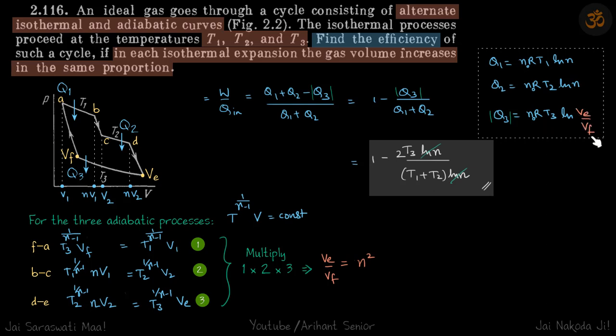So we need to find what is the value of Ve by Vf. For that we are going to use the adiabatic processes. So for all three adiabatic processes, we will write the equations between temperature and volume because we need the ratio of volumes and temperatures are given to us.